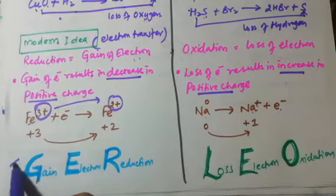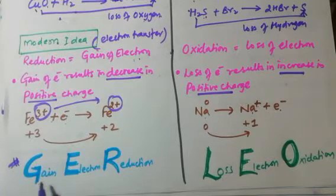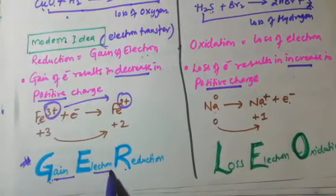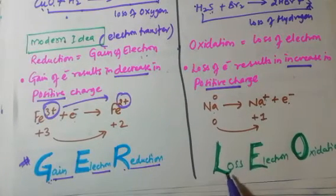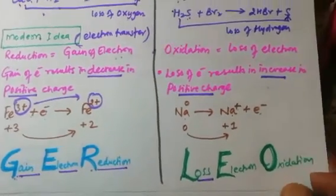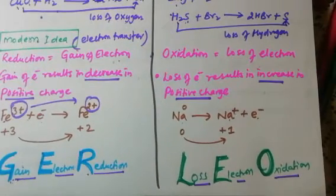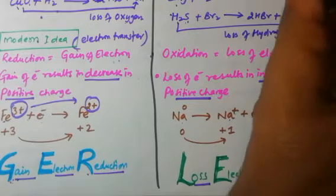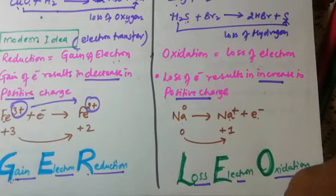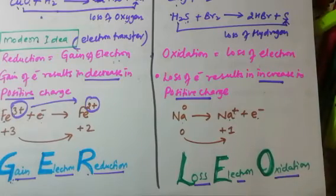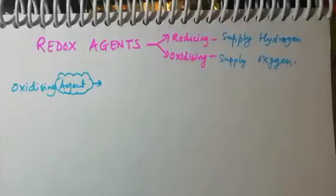In simple words: GER — gain of electrons is reduction. Loss of electrons is oxidation. Now that we know gain and loss of electrons, we can also find out the oxidizing agent and the reducing agent.